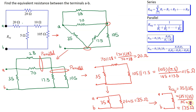Thus, from the point of view of terminals A and B, this network of resistors is equivalent to a single 17.5 ohm resistor. This example illustrates the advantage of correctly using a T-to-delta transformation to help find this value.